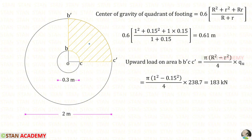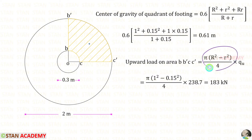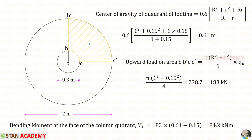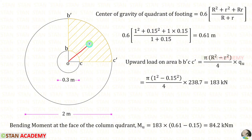We need to find the upward load on the shaded area using the area formula. Applying the values, we get 193 kN. To find the bending moment at the face of the column quadrant, we multiply this force by the moment arm. We know the CG distance is 0.61 m.